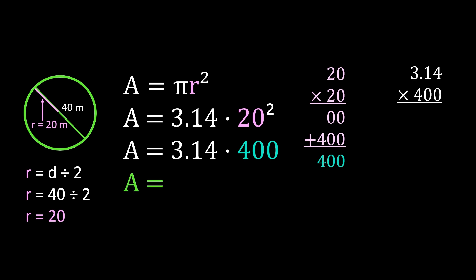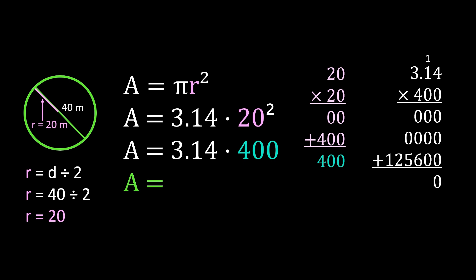We multiply 400 times 3.14. Multiplying by the two zeros gives all zeros. Then multiplying by the 4: 4 times 4 is 16, 4 times 1 is 4 plus 1 more is 5, and 4 times 3 is 12. Adding the columns: 0, 0, 6, 5, 2, 1. We had two decimal places in our problem, so we place two decimal places in our answer, giving us an area of 1,256 meters squared.